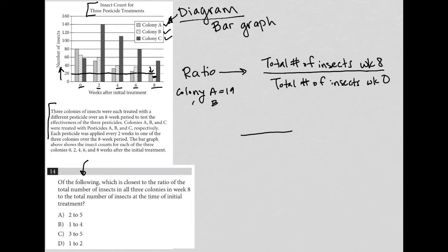And then colony B looks like it's about half of that. So colony B, I'm going to say is 10. And then colony C is up here above 40, below 60, let's call it 50. So colony C is at 50. So all together, I have 19 plus 10 plus 50, which is equal to 79.